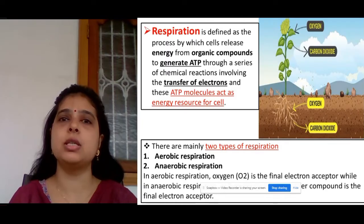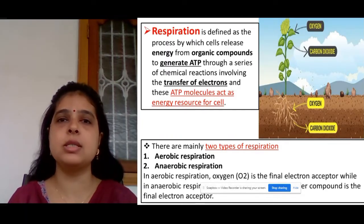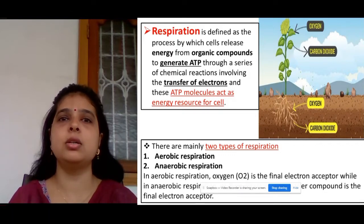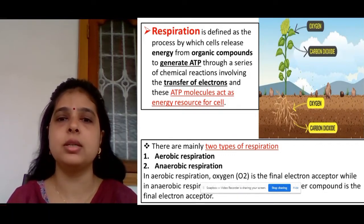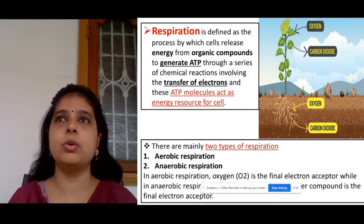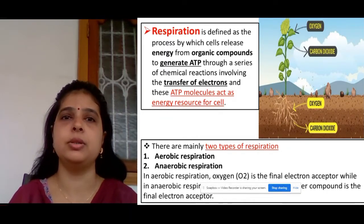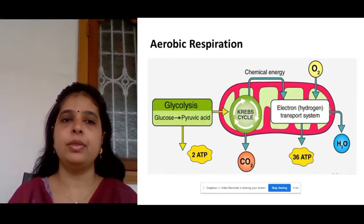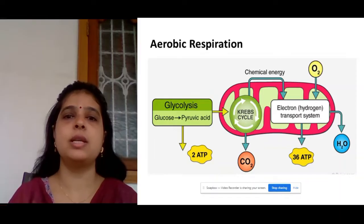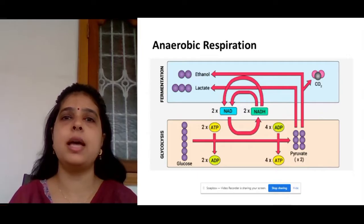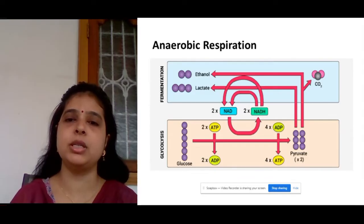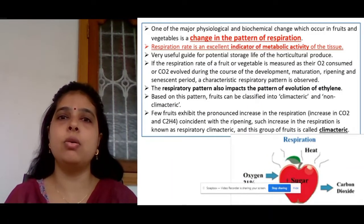Respiration is basically of two types. First is aerobic respiration, which takes place in the presence of oxygen. Next is anaerobic respiration, which occurs in the absence of oxygen — it is also called alcoholic or lactic acid fermentation. The aerobic respiration pathway involves glycolysis, the Krebs cycle, and the electron transport system. The anaerobic respiration pathway involves glycolysis and fermentation.